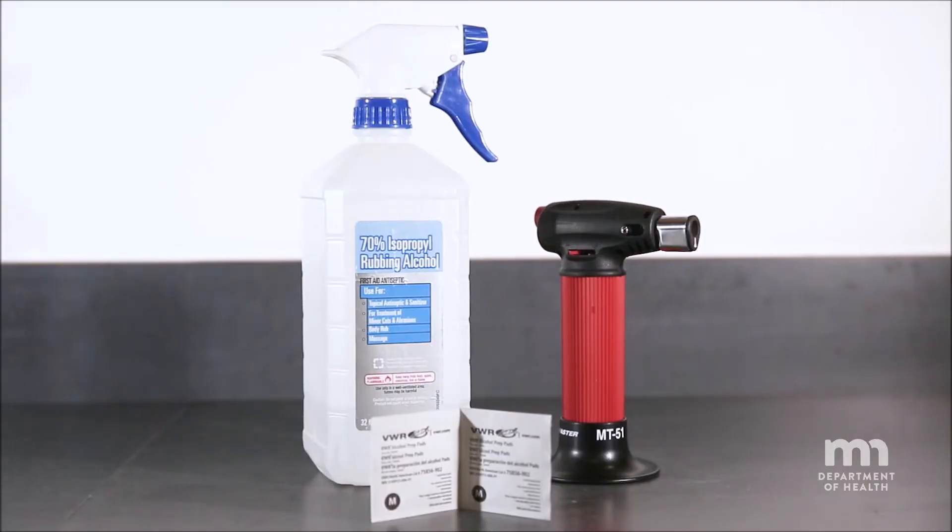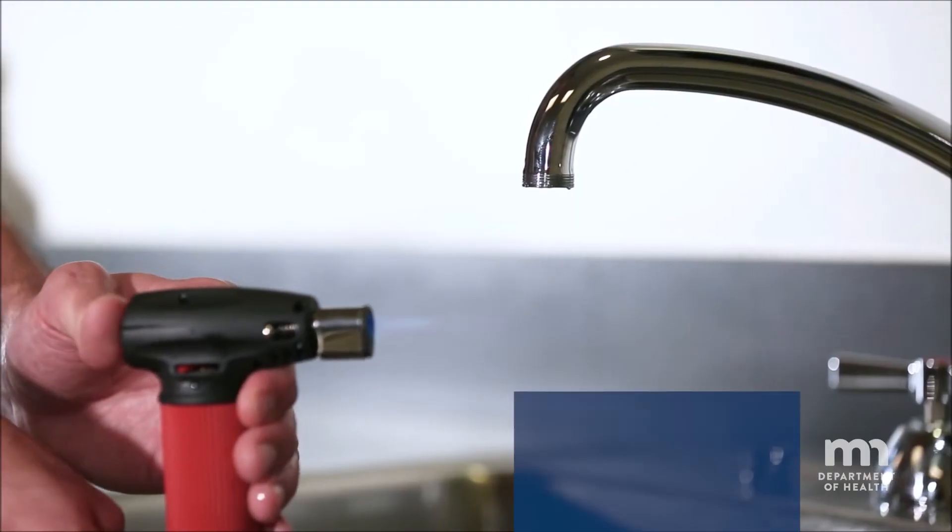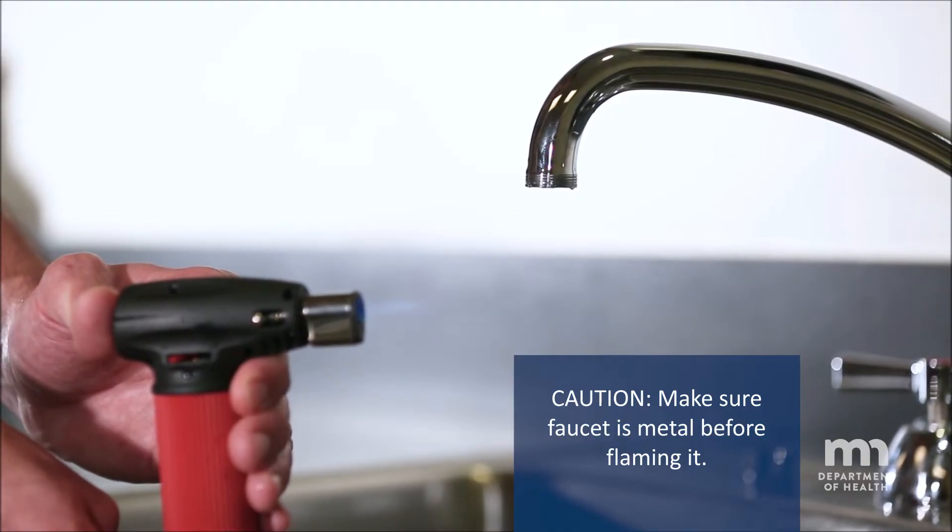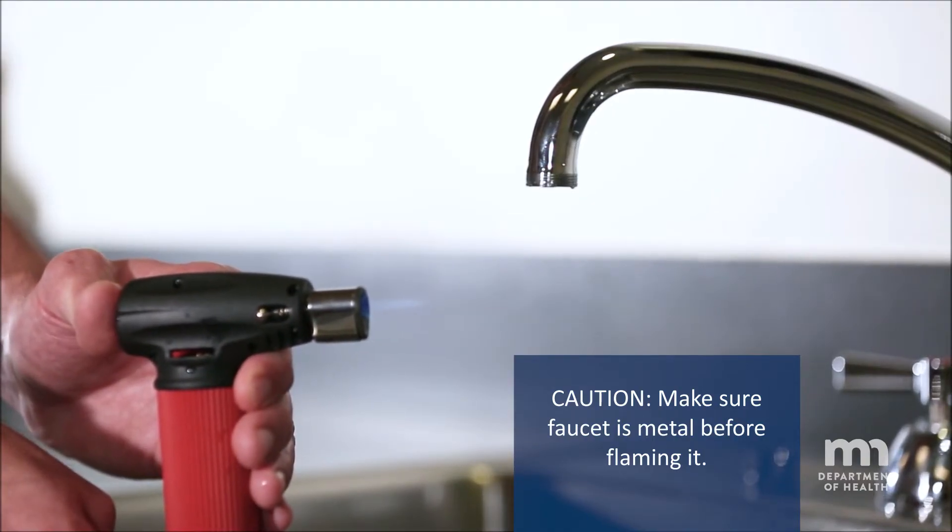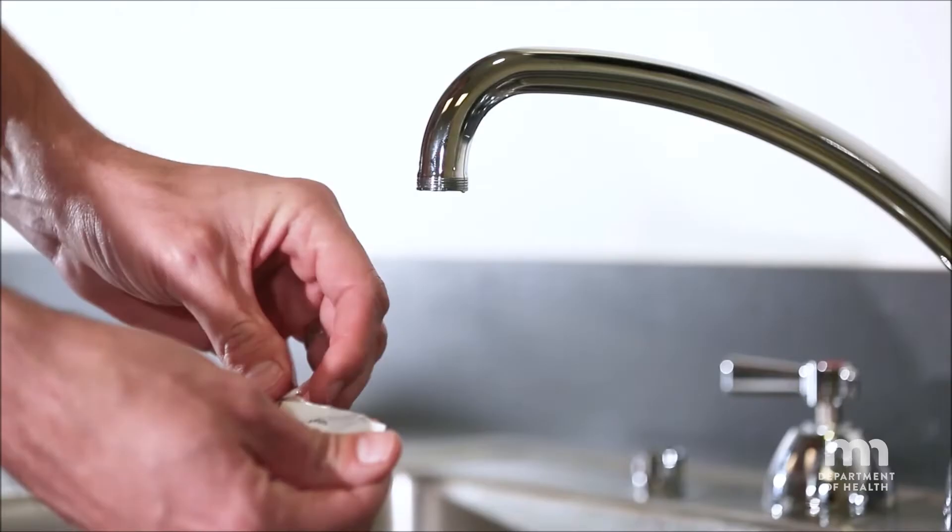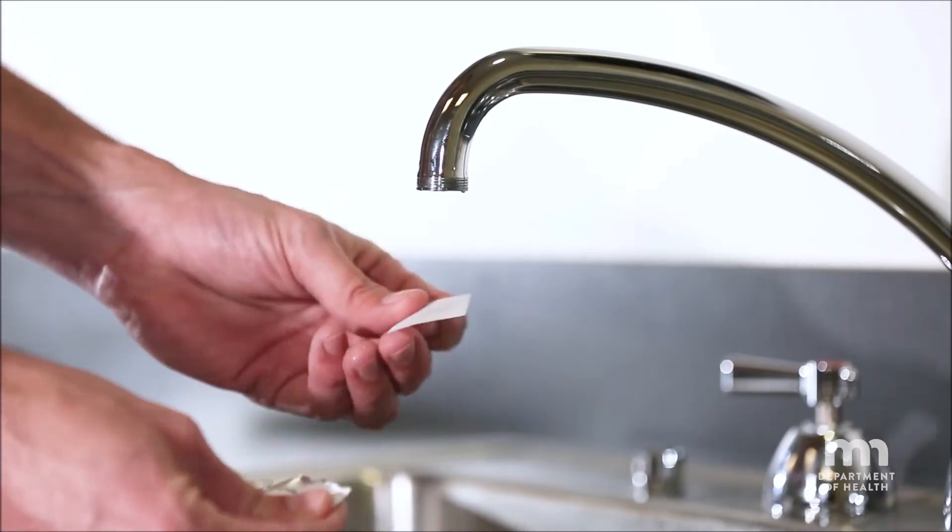It is recommended to sterilize the faucet prior to collecting the sample. This is done after all attachments are removed. Sterilization can be achieved by flaming the edge of the faucet with a torch or lighter for at least 15 seconds, or by wiping the edge down with an alcohol product.